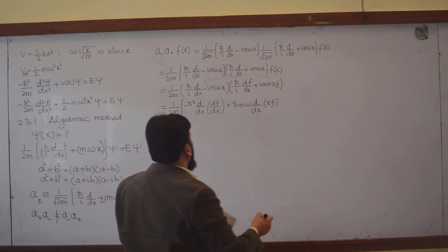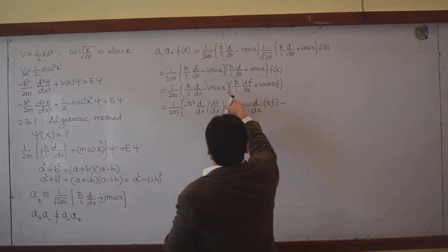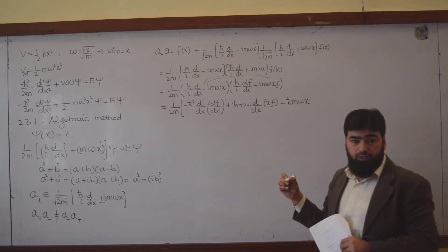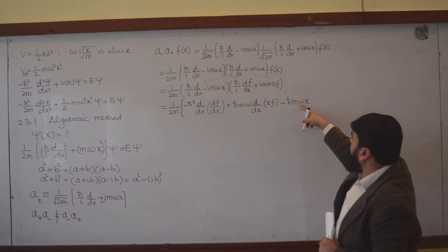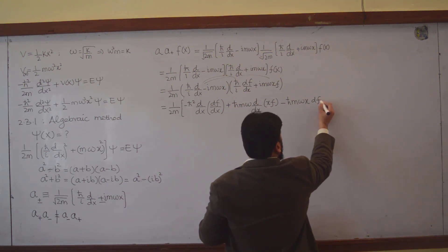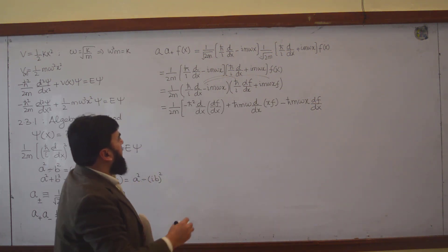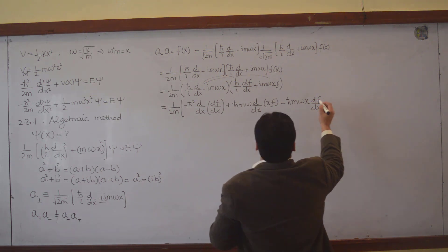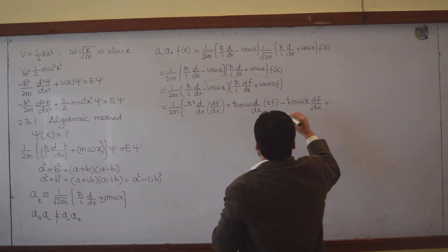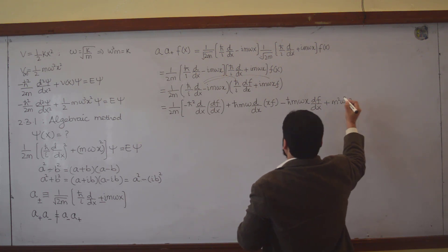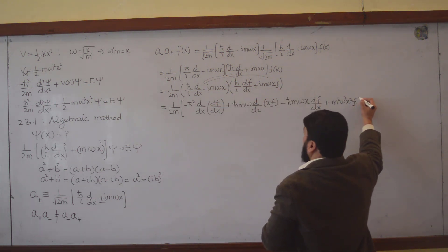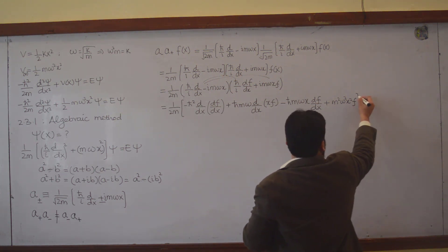Taking this term with this term: i and i cancel, giving ℏmω. So we have ℏmω·x·df/dx. Then the last term: plus times minus makes minus, and i² makes another minus, so it becomes plus m²ω²x²f. So we are done here — one more factor of 1/(2m) is common.